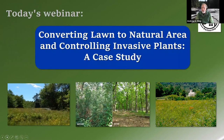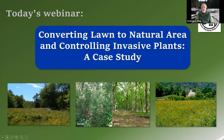Today's webinar covers two additional high-priority land care practices for the case study property, based on the interests of the property owners and the results of the checklist as described in the land care plan. First, we'll cover how to convert unused lawn area into a haven for wildlife by converting it to woods and meadows. Planting trees, shrubs, forbs, and grasses is only the first step — controlling competing and invasive vegetation and maintaining tree protection will help ensure success. Next, we'll examine invasive plant problems and herbicide selection and application methods.